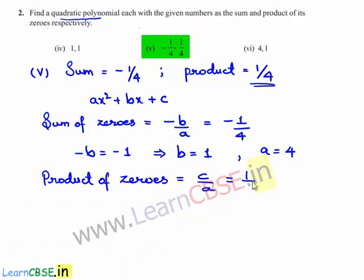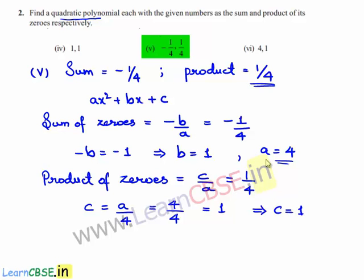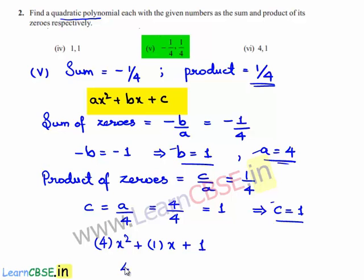We know that the product of the zeros is equal to C by A, and the given product to us is 1 by 4. So by cross multiplication, C is equal to A by 4, but we found the value of A to be 4. In place of A we can write 4, that is 4 divided by 4 which is equal to 1. Therefore C is equal to 1. Finally, we found the value of A as 4, B as 1, and C as 1. Substituting the values of A, B, and C in Ax² + Bx + C, we get 4x² + x + 1. Hence, the required quadratic polynomial is 4x² + x + 1.